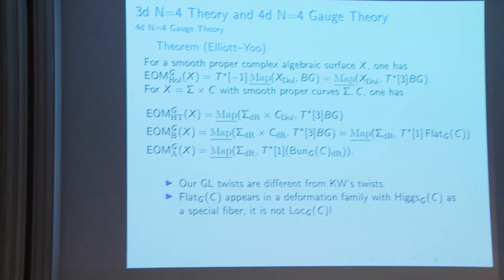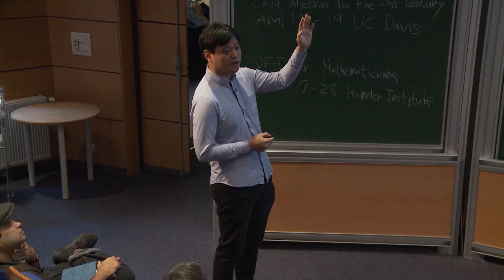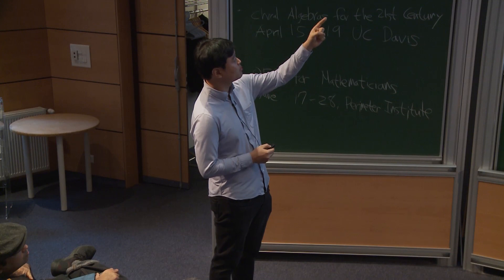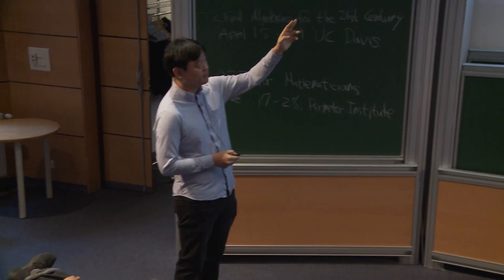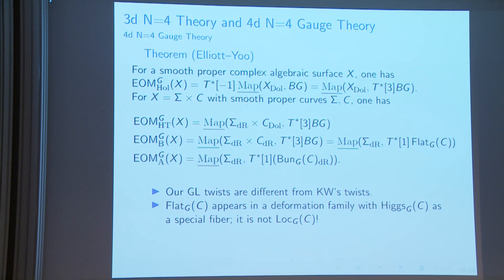In geometric Langlands one should perhaps use flat connections rather than local systems because topology of complex numbers doesn't exist in the algebraic setting. What we're saying is that doing Kapustin-Witten theory carefully, the natural model we see is flat connections. This is because we are seeing this Higgs moduli as a first step, and these things are realized as a further twist — a deformation of the Higgs moduli — giving flat G rather than local G.